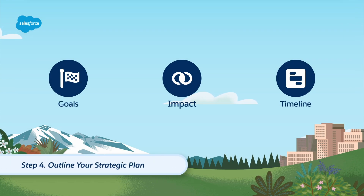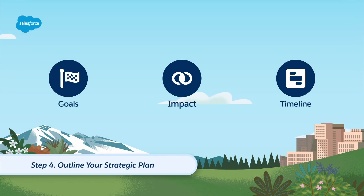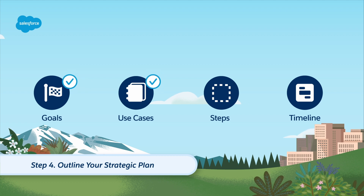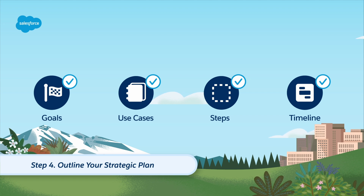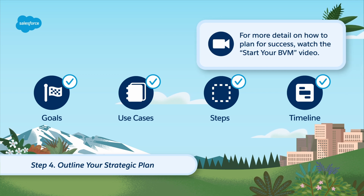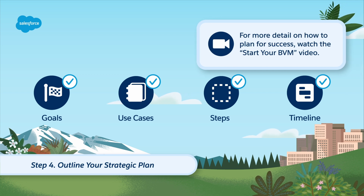Step four: outline your strategic plan. Define your goals, identify use cases, review implementation steps, and plan your timeline. Your personalization strategy should line up with your overall business objectives. For more detail on how to plan for success, watch the Start Your BVM video to kickstart your value mapping exercise.